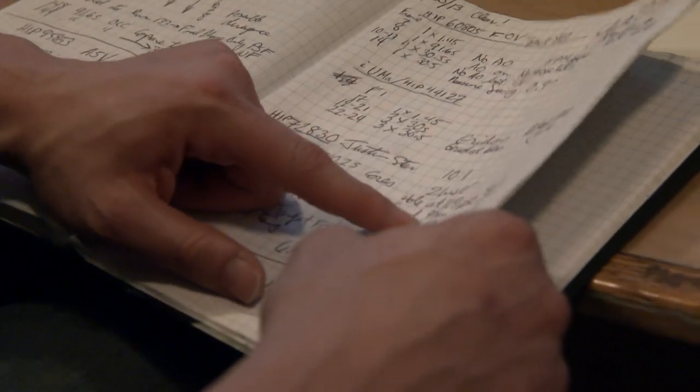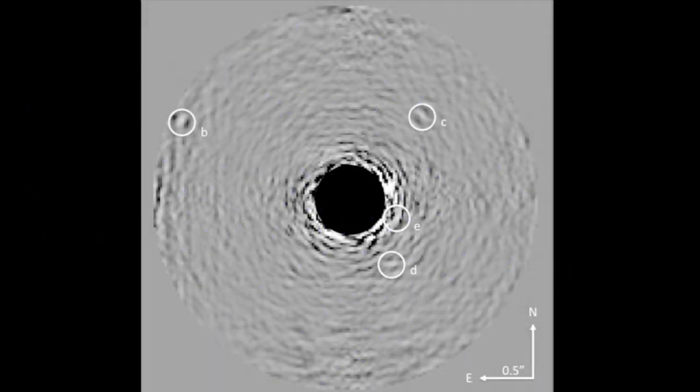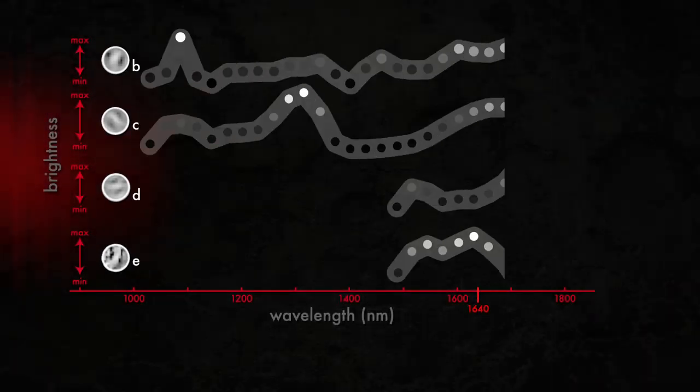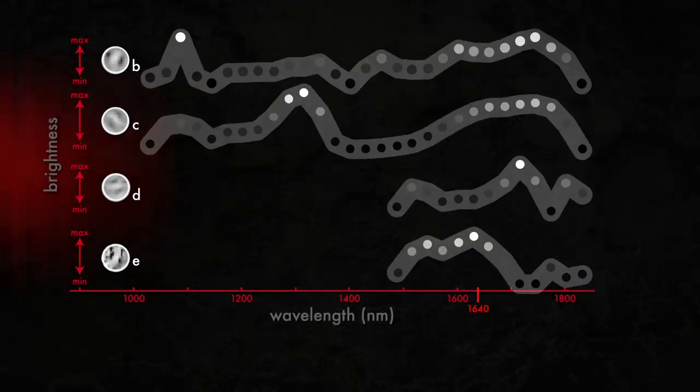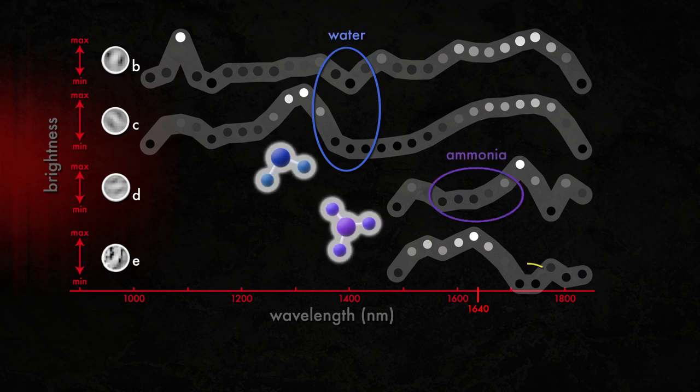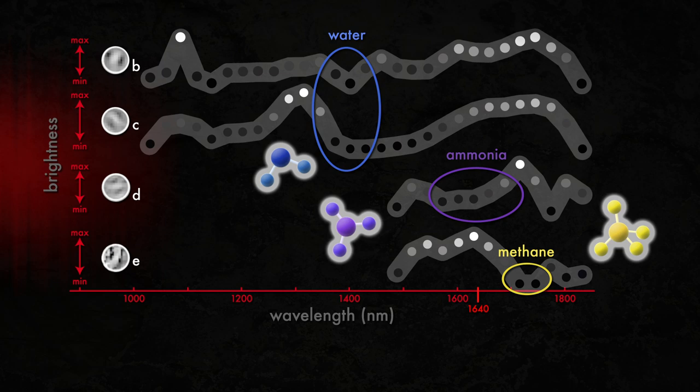So one of the high points of Project 1640 so far has been our observations of the planetary system with the romantic name of H.R. 8799. What we were able to do is take a snapshot showing all four planets at the same time, and in each case be able to get a spectrum of all the planets and start to be able to do the characterization. And our goal is to be able to repeat that many times over, finding new systems, characterizing them, and start to build up many, many family portraits of these new exoplanet systems.